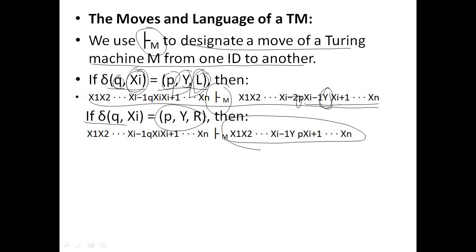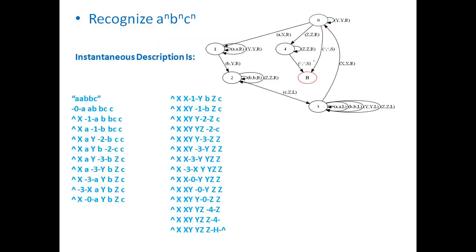Now we will go with one example of how to describe the ID of a Turing machine — that is, the instantaneous description. Here, we design one Turing machine to recognize the language A^N, B^N, C^N. This means the number of A's should be followed by the same number of B's, and then the same number of C's.